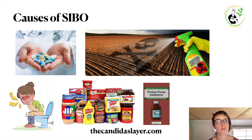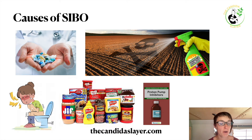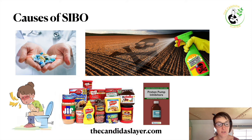What are the causes of SIBO? It's mainly chemical toxicity, mainly caused by chemical drugs. The number one cause is antibiotics — they destroy your gut flora and destroy the balance in your gut. The second main cause is proton pump inhibitors.